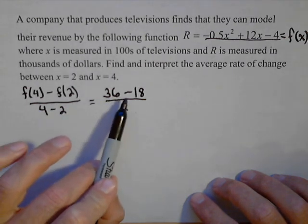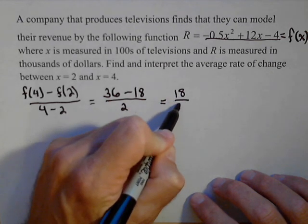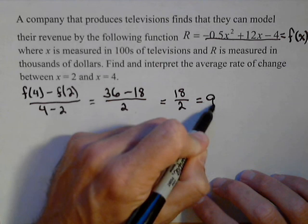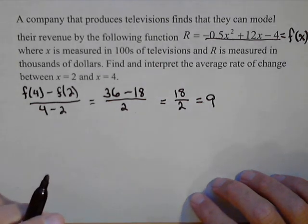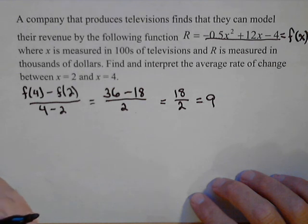So on top, we got 36 minus 18. So 36 minus 18 is 18 over 2, or 9. Now we have to talk about the units on this 9. Start with the units, then you can build your interpretation.